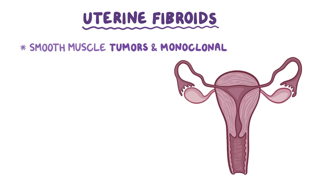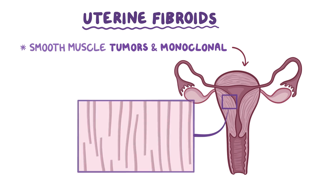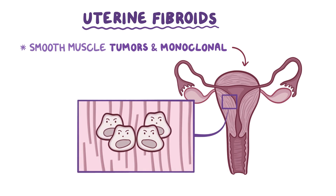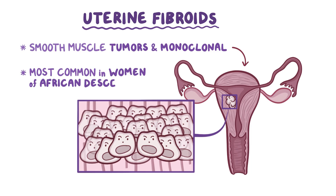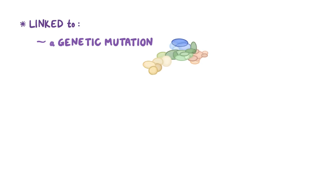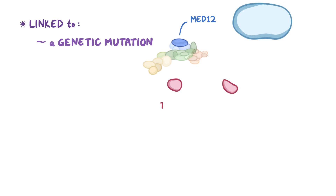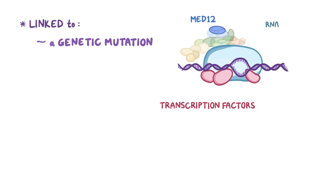Uterine fibroids are smooth muscle tumors, and they're monoclonal, meaning that they arise from a single cell of the myometrium that starts dividing uncontrollably. Overall, fibroids most commonly affect women of African descent. Fibroids are sometimes linked to a genetic mutation, with the most common being a somatic mutation in the mediator complex subunit 12, or MED12 gene. Mediator complex subunit 12 is part of a group of proteins that control gene activity by regulating how transcription factors bind to RNA polymerase II.